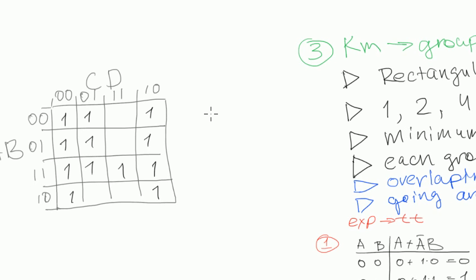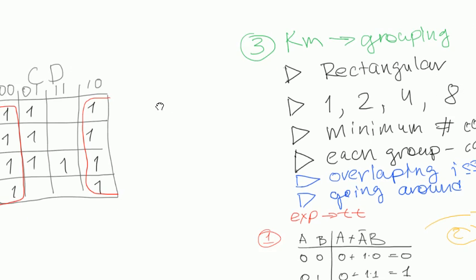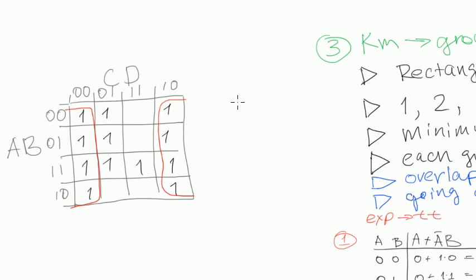So start looking at the boundaries and you can see that you have four cells here and you have four cells here. That's how you can group. So first thing I would recommend is to see where you have lots of ones near the boundaries and try to use that.